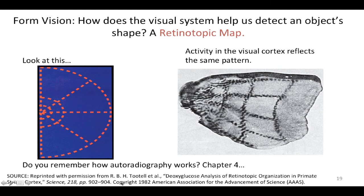The way we know this is through a technique called autoradiography, wherein there's an injection of a dye included with a glucose solution. When neurons are active, they need energy, so they use glucose. That glucose then allows the image of the shape of the active neurons to be observed if an x-ray is taken of that brain tissue at a later time.